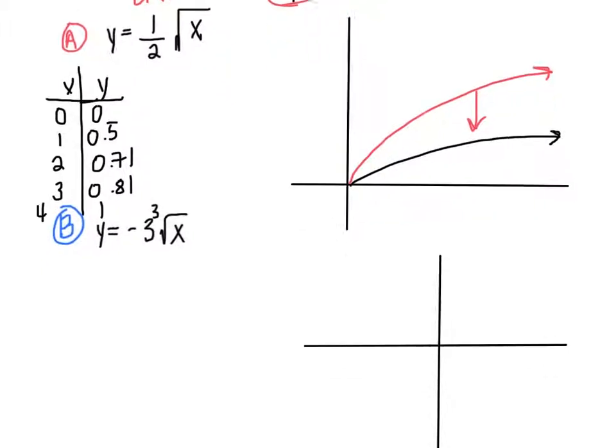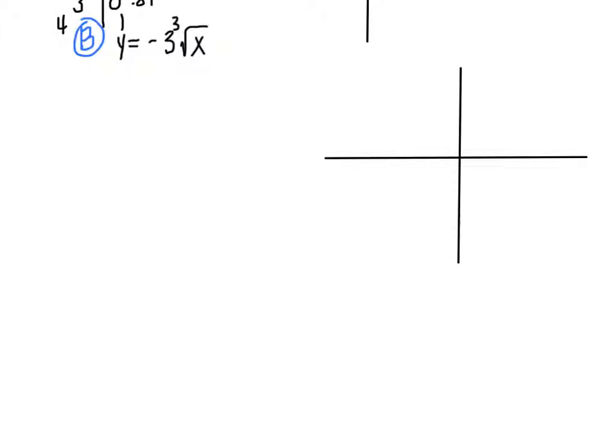Next let's move on to our problem B. We have y equals negative 3 times the cube root of x. So we're going to again plug into our xy table.